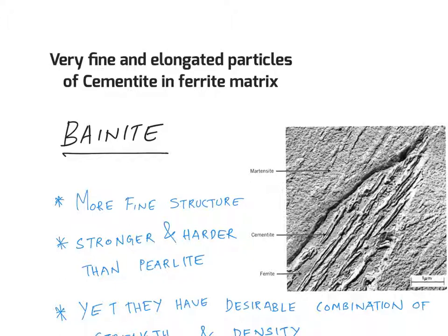Now what happens when you have very fine and elongated particles of cementite? That effectively gives you more phase boundary area in a given volume of material. That essentially means that you have more resistance or more reinforcement of the ferrite matrix by cementite.